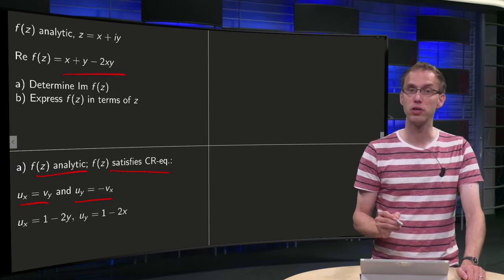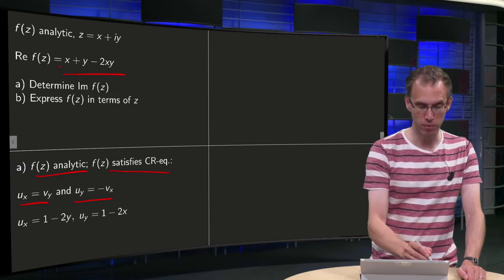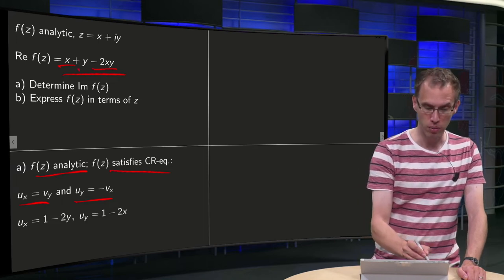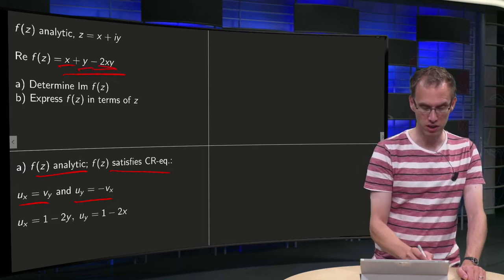We do have u, so we can compute ux and uy. So here we have our u, so ux equals 1 - 2y and our uy equals 1 - 2x. So there they are.